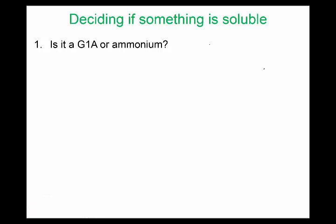Let me write down a few examples. If I have iron acetate, Fe(C₂H₃O₂)₂, I want to know is this soluble or not. First of all, is it a group 1 or ammonium? The answer is no, the cation is Fe, so the answer is no.